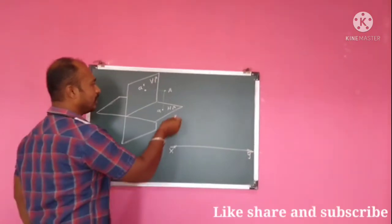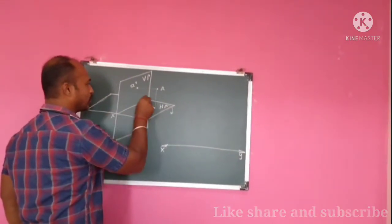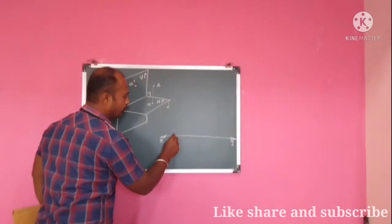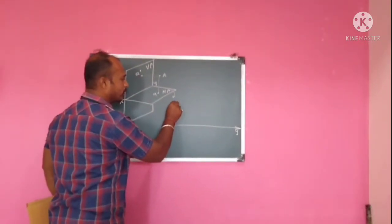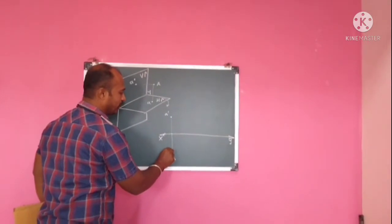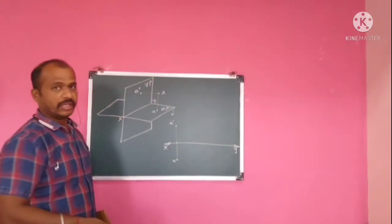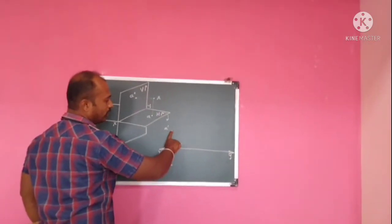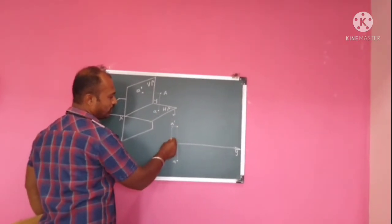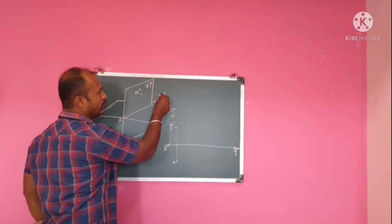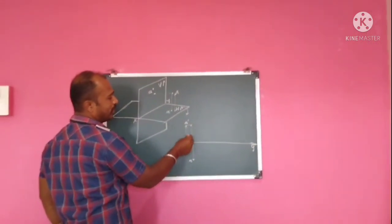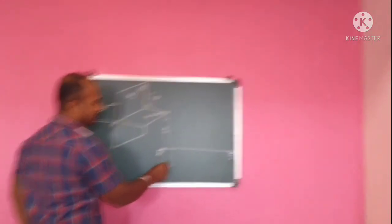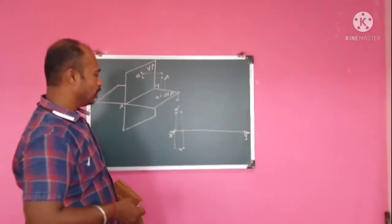When we rotate the planes, the front view goes above the XY line and the top view goes below the XY line. So the front view (a-dash) is above XY and the top view (a) is below XY. Whatever distance the point is from HP, that is plotted in the front view. Whatever distance the point is from VP, that is plotted in the top view.